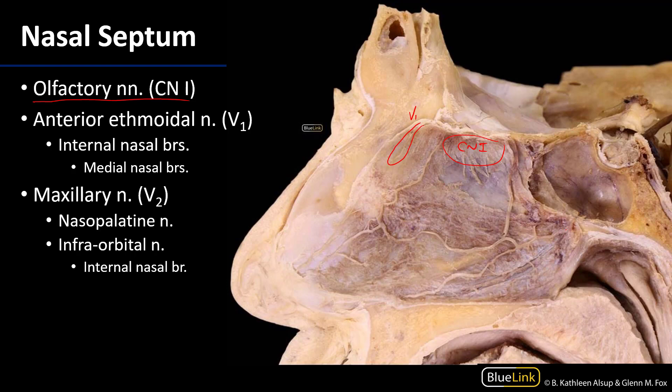The most reliable nerve you're going to be able to locate in the nasal cavity is the nasopalatine nerve, which is a branch of V2. The nasopalatine nerve can be found in a groove of the vomer, descending down along the vomer in an oblique fashion towards the floor of the nasal cavity.